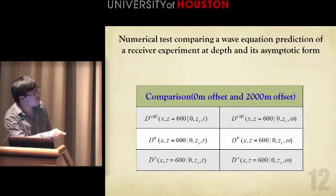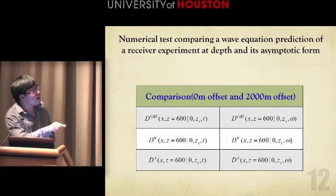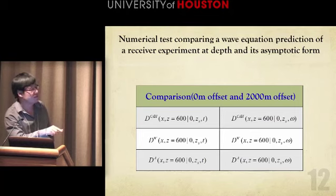This is the exact Cagniard-de Hoop solution at z equal to 600. And this is the wave prediction, wave method prediction. This is its corresponding asymptotic prediction. This is time domain and frequency domain. And we compare two traces. One trace is at zero meter offset. The other is at 2,000 meter offset.